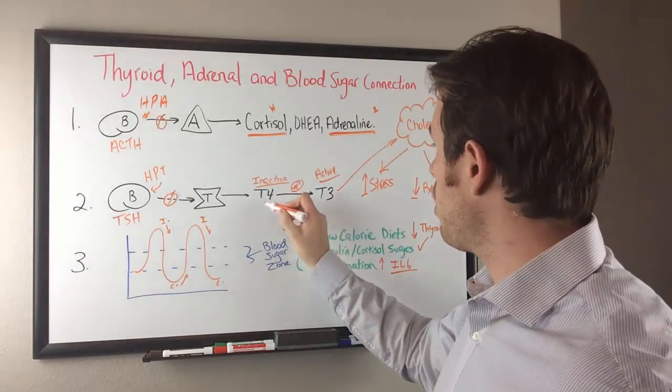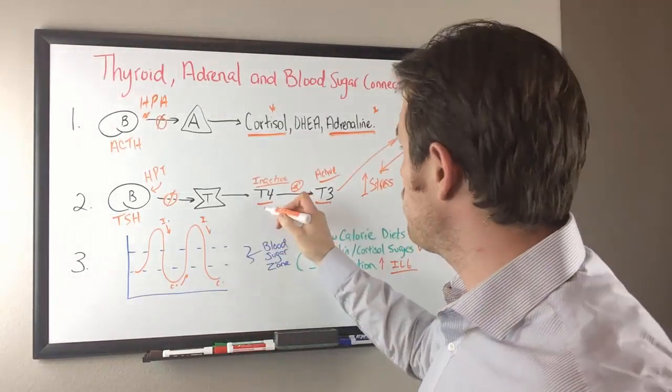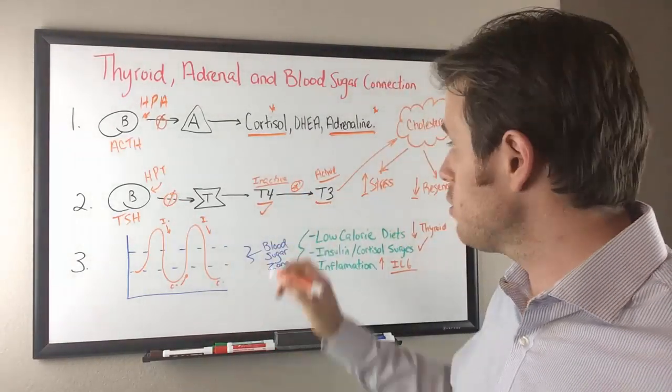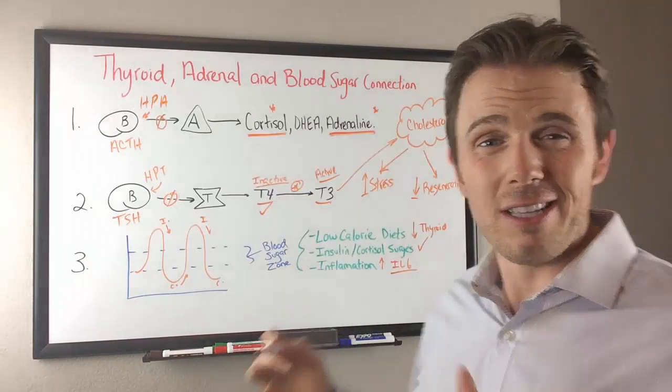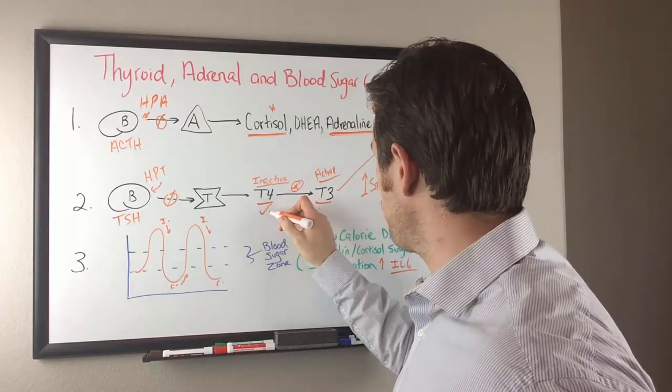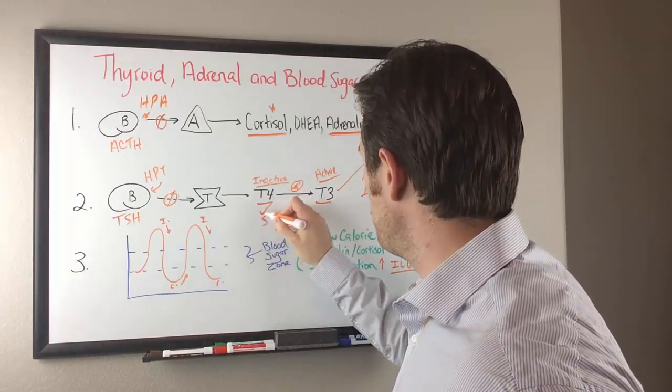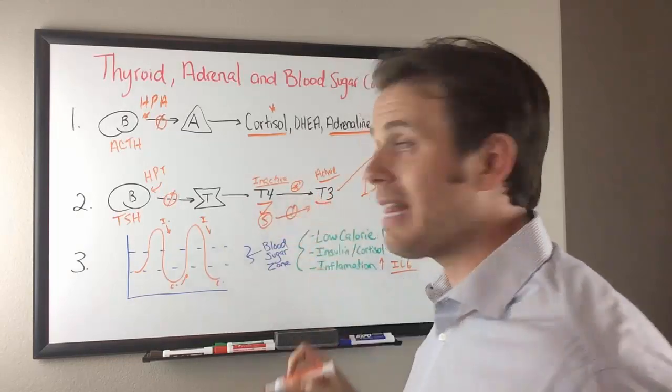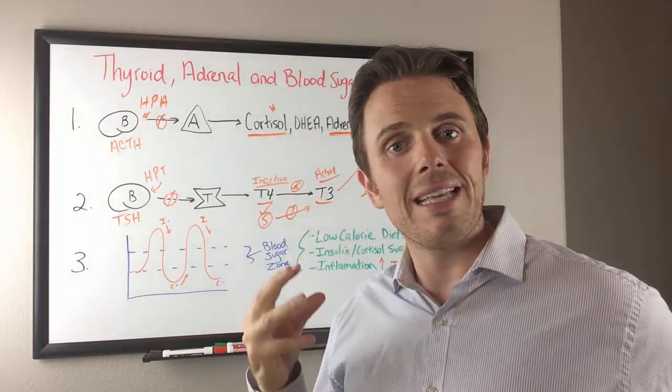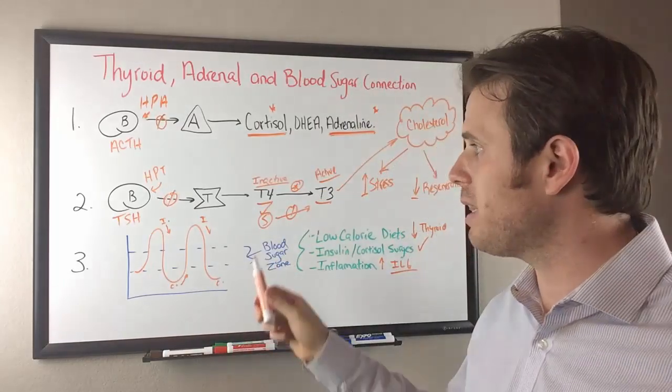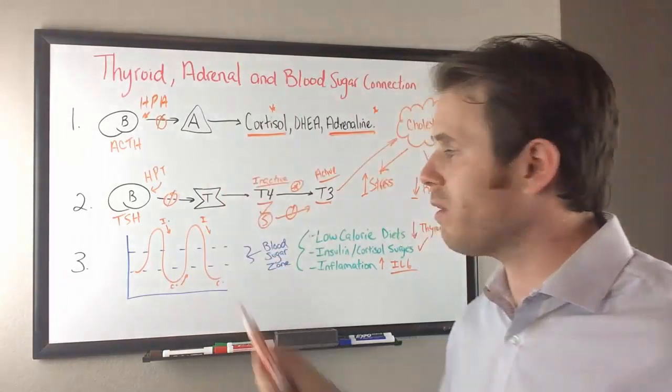Remember, here's the problem. Blood sugar issues are going to cause T4 to T3 conversion problems and Synthroid is just T4. So if we're not converting it well, you can see how that Synthroid has not fixed the problem because it's not getting converted to T3. That's the issue there. So we want to get the inflammation addressed. And part of doing that is getting the adrenals fixed as well as the blood sugar.